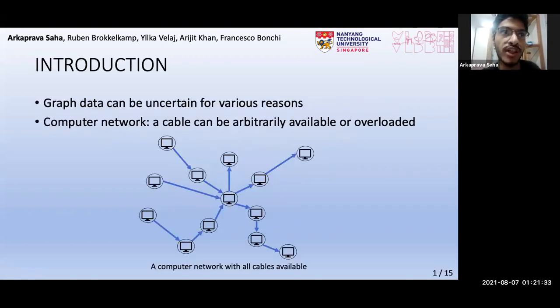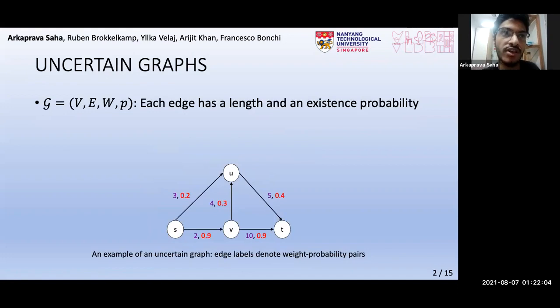As we all know, a lot of real-world data is stored in the form of graphs. Now, that data can be uncertain for many reasons. For example, this figure shows a computer network where nodes are computers and edges are cables connecting them. Sometimes the network looks like this, where all cables are available for communication. And sometimes it looks like this, where some cables are not available because of network overload or technical faults. Motivated by this uncertainty in graph data, we can define uncertain graphs where edges have lengths as well as existence probabilities.